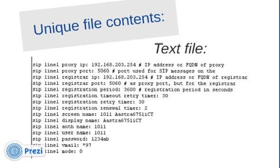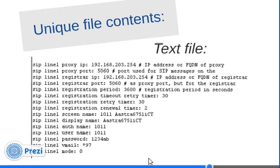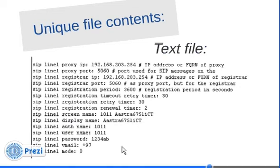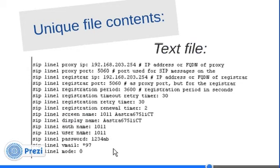The unique file is a text file you can read with a text editor. This snippet shows the configuration for line one — you can have multiple lines coming to an IP phone. It contains the IP address (or domain name) of the proxy and registrar, in this case 192.168.203.254, the proxy port 5060 for SIP, timers like registration period and retry timer, a display name — this was just a test phone called Aastra 6751 ICT, normally it would be a name like John Doe. The extension number, authentication name, and username can all be the same — in this case the extension is 1011.